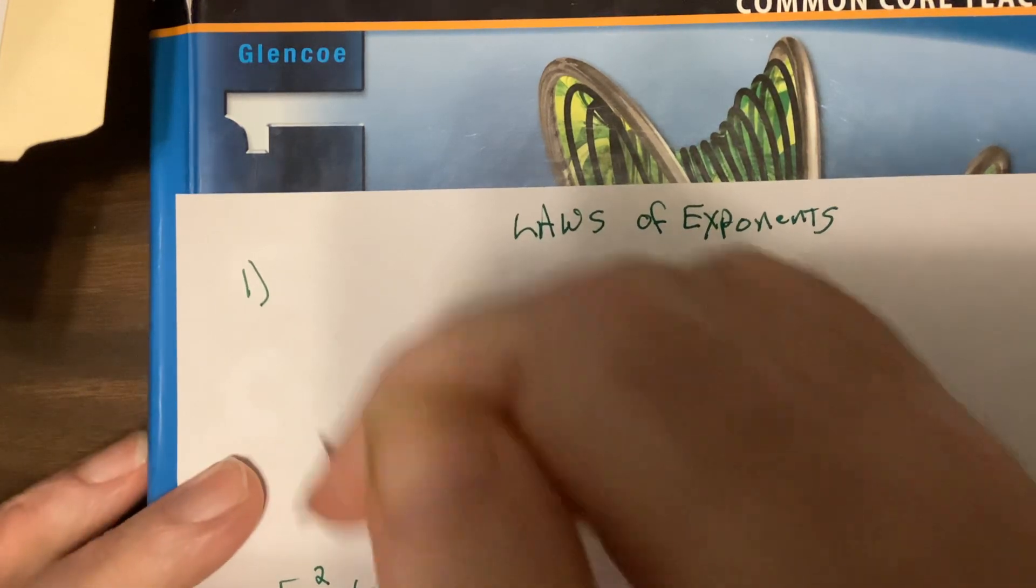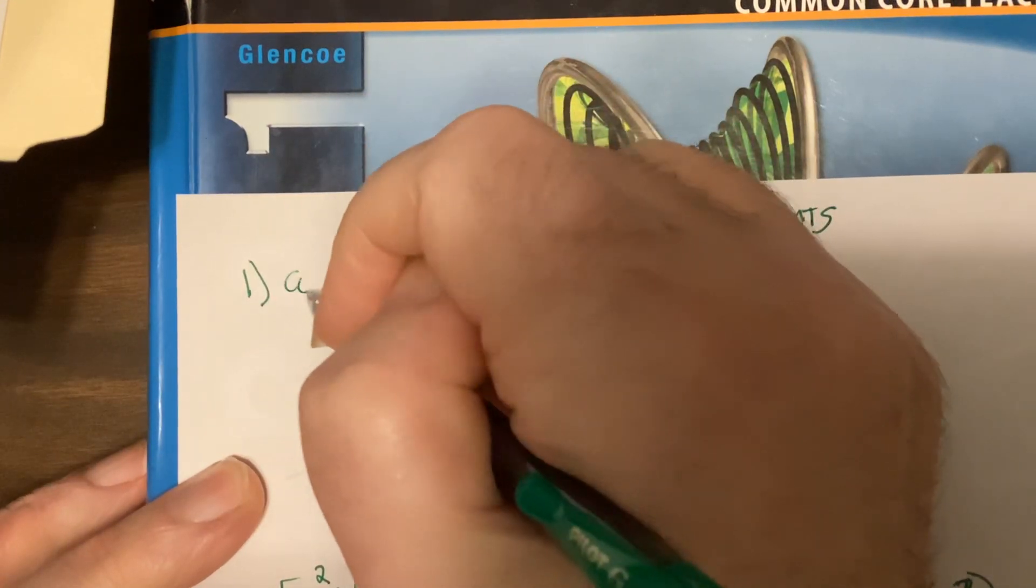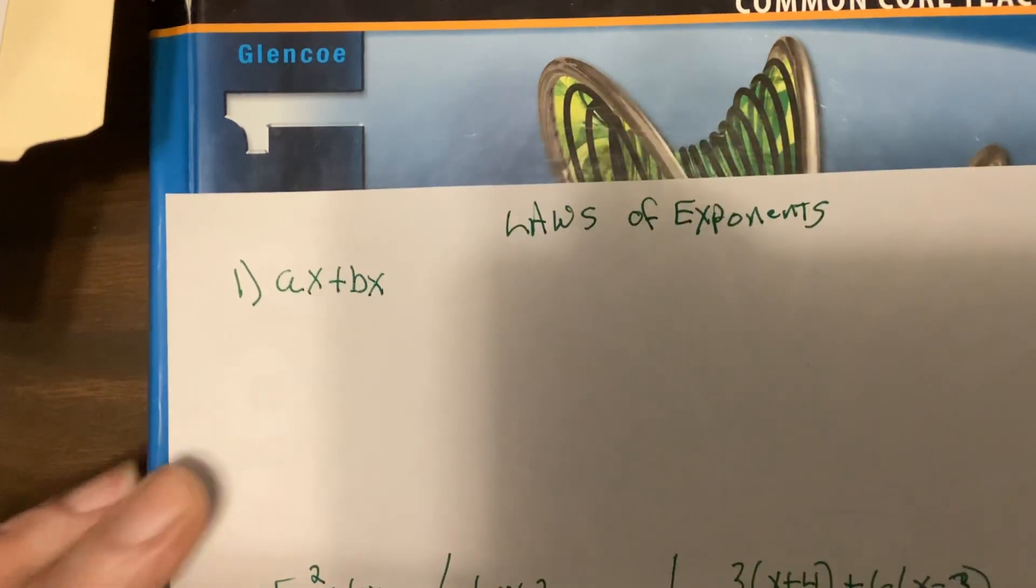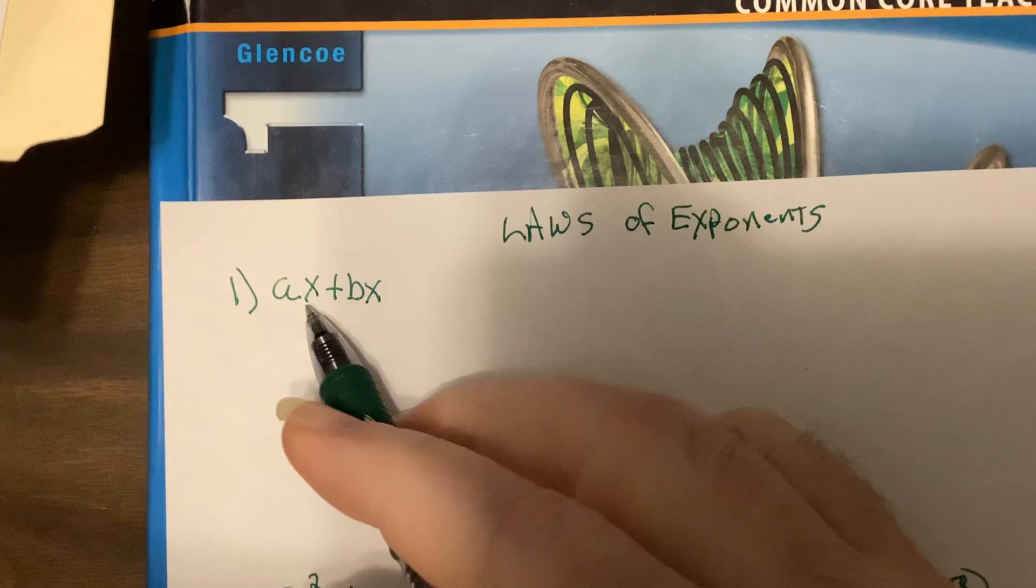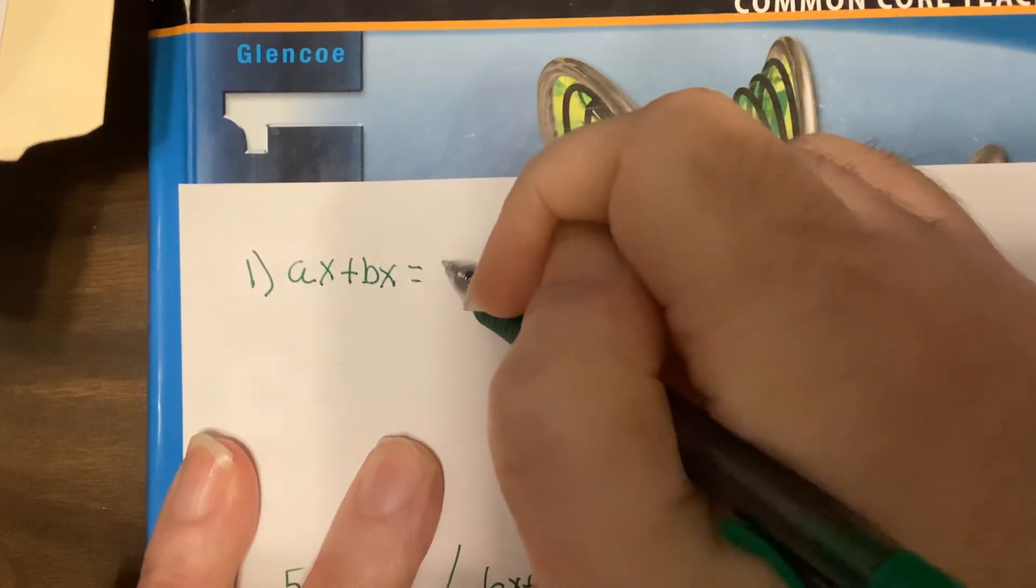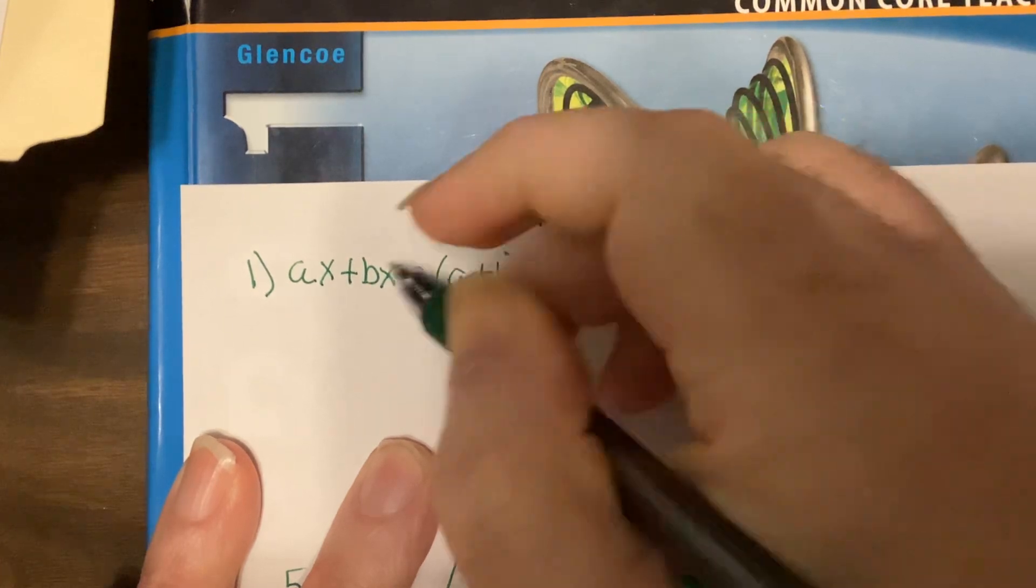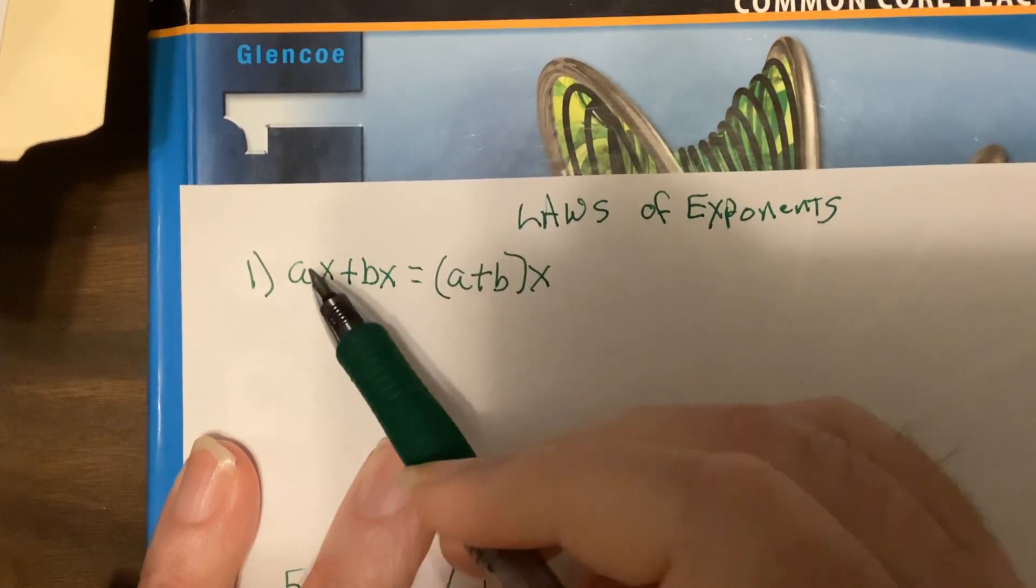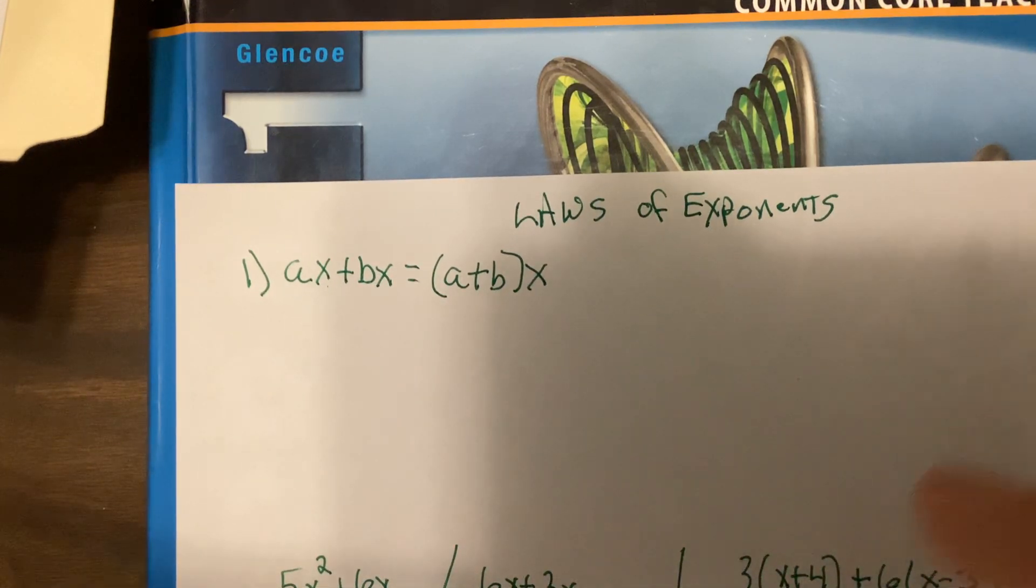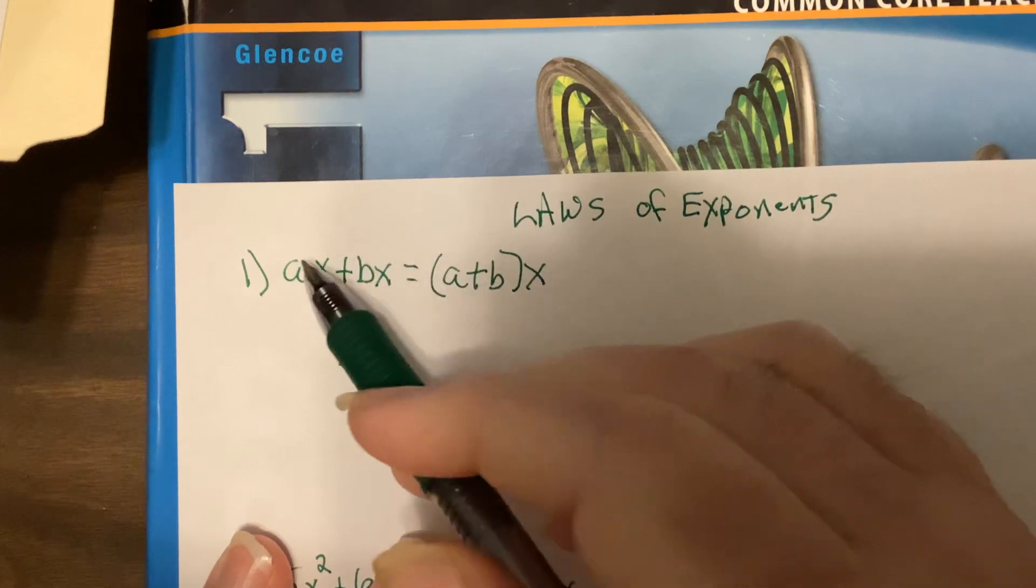So law one, not really a law because it doesn't deal with exponents. But what do you do when you're adding two things and you have the same variable? You just add the coefficients, the numbers times the variable. Now, notice if this was an X and this was a Y, I'd be done.